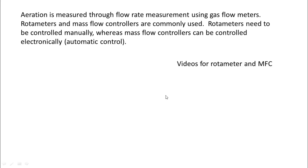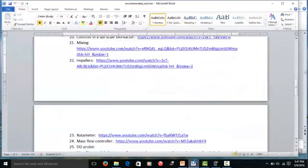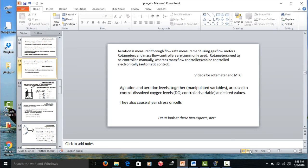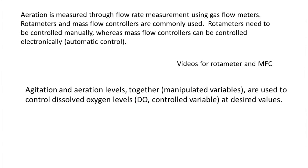Aeration is measured through gas flow rate measurement using gas flow meters — rotometers and mass flow controllers are commonly used. Rotometers need to be controlled manually, whereas mass flow controllers can be controlled electronically through automatic control. Videos 23 and 24 cover the rotometer and mass flow controller respectively. Together, agitation and aeration levels — both manipulated variables — are used to control the dissolved oxygen level at desired values.